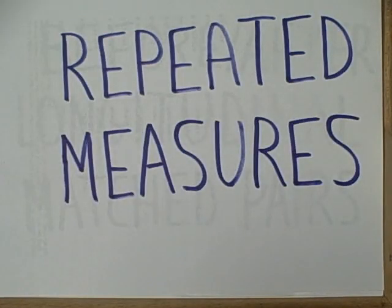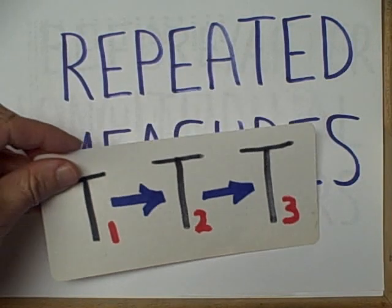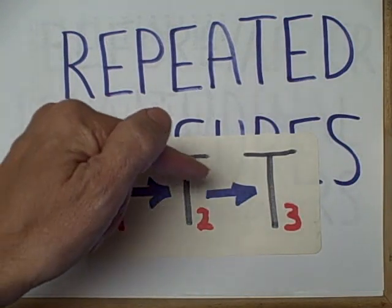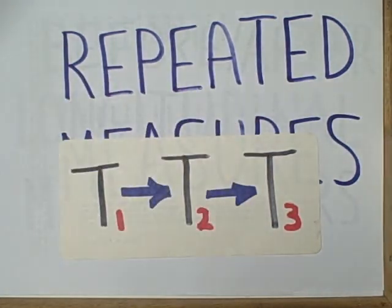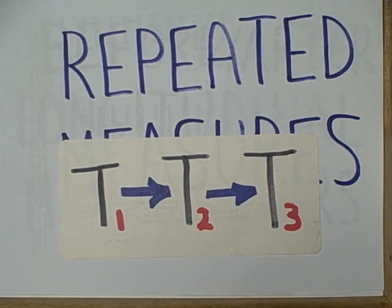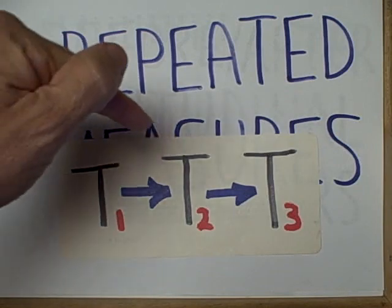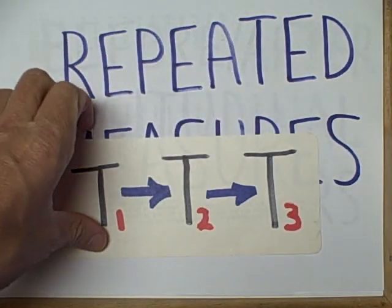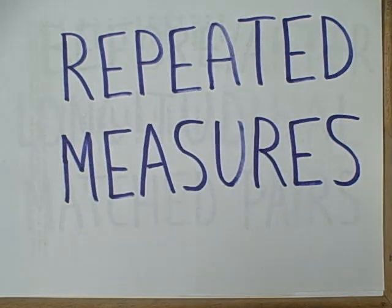A second research design is known as repeated measures. This means that we look at our sample at several different points in time or from several different aspects, and we compare the first measure to the next measure and so forth.